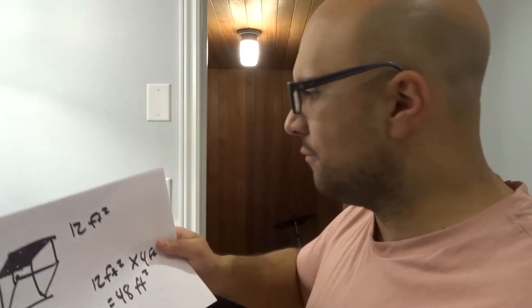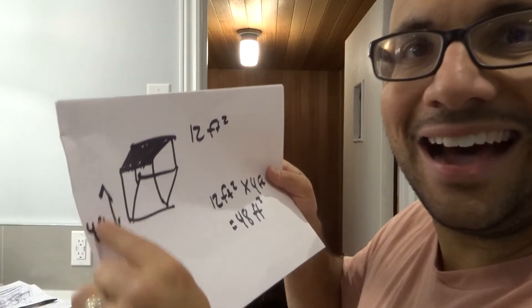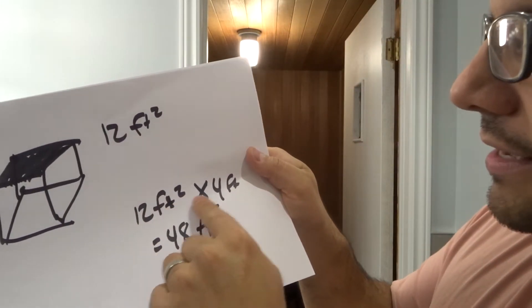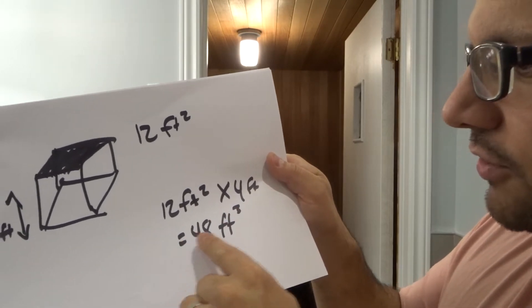We take the 12 square feet surface area and multiply it by the height. That gives us cubic feet. So what I did here was 12 square feet times 4 feet equals 48 feet cubed - 48 cubic feet.